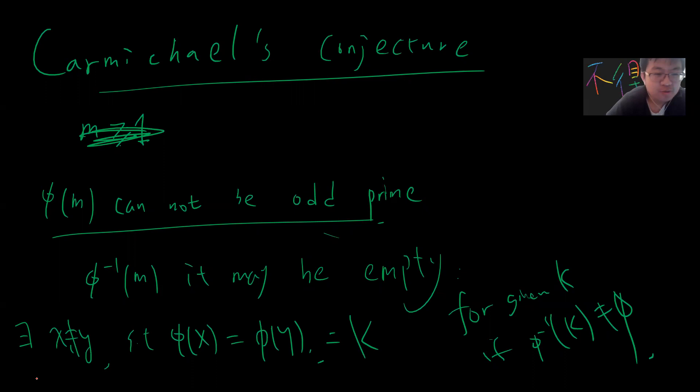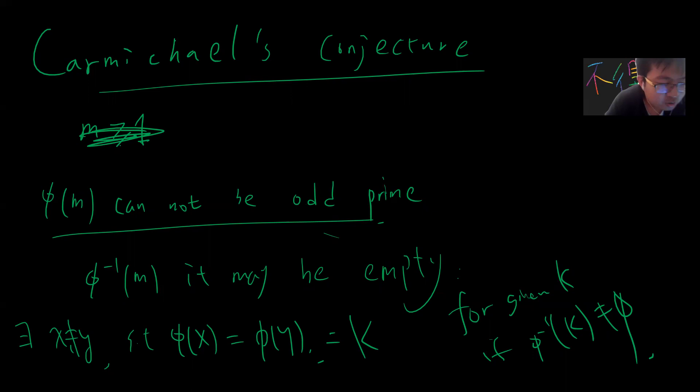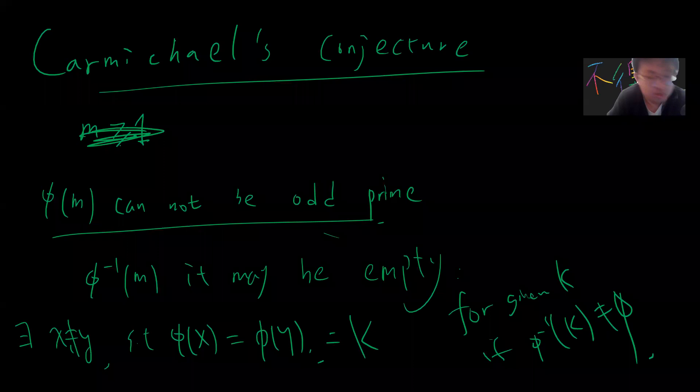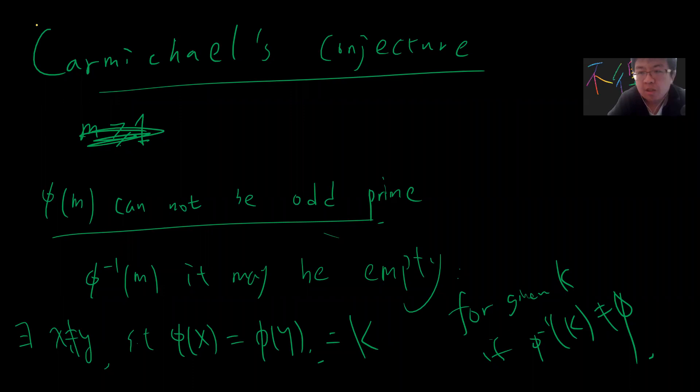Welcome to my analytic number theory lecture. Previously I introduced two functions: the Euler phi function and the Möbius function. Today let's introduce another two, and then we'll talk about Dirichlet products to finish this elementary introduction.